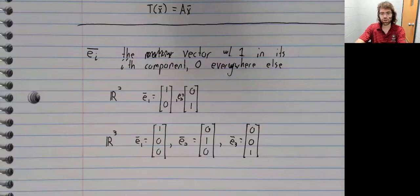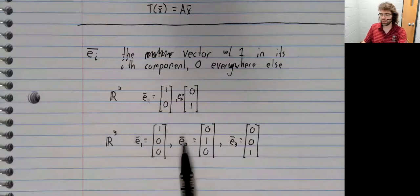In R three, we have e sub one, e sub two, e sub three.